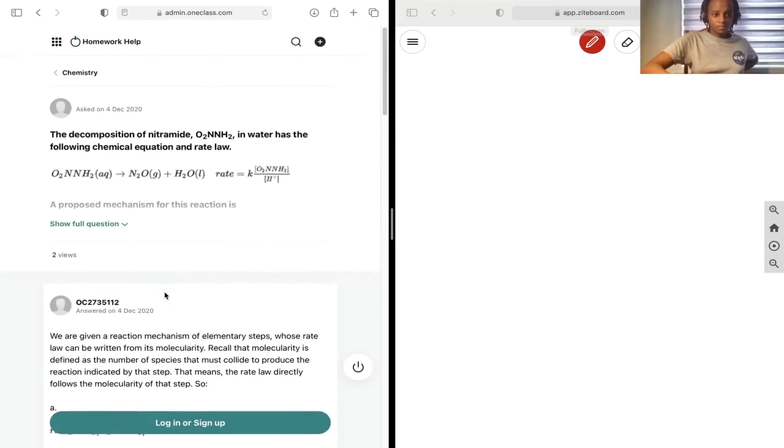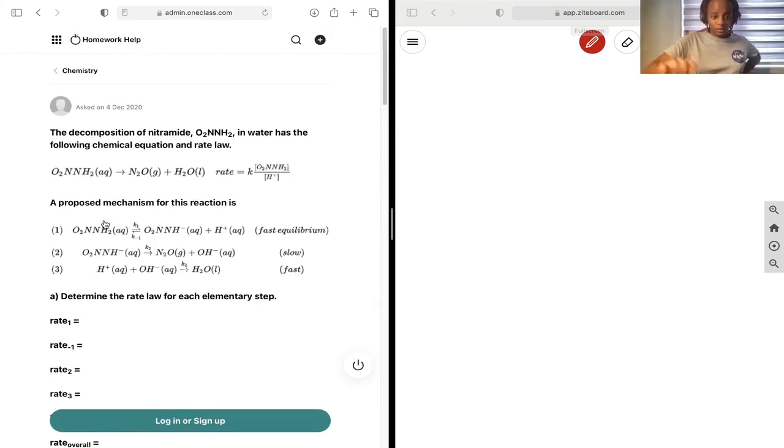So let's start by determining the individual rate laws, and we know that the individual rate laws depend on the reactants used, and so for rate 1.